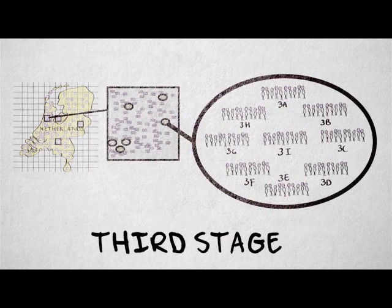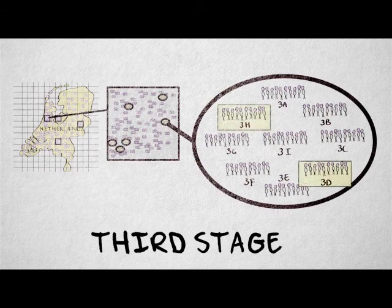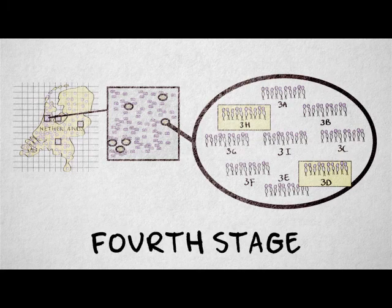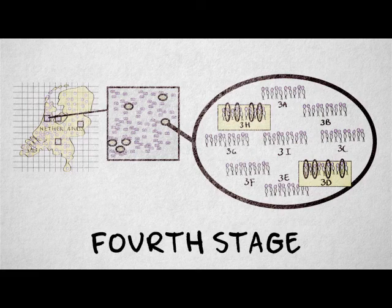In the third stage, third-year math classes are randomly sampled from the previously selected schools. We could even include a fourth stage, where students are randomly sampled from the previously selected classes. Stratification can be used in all of these stages.